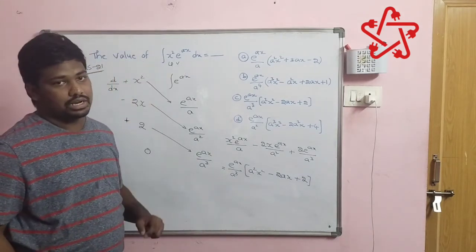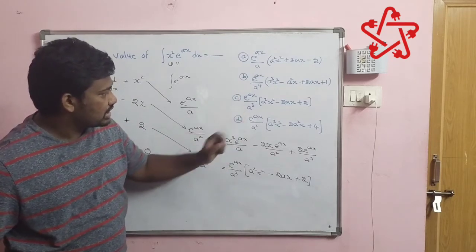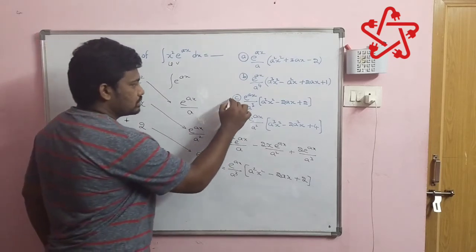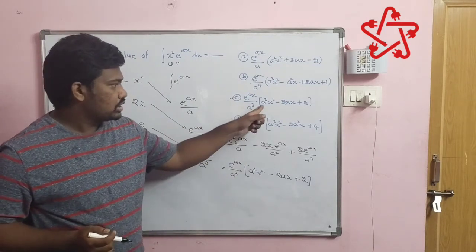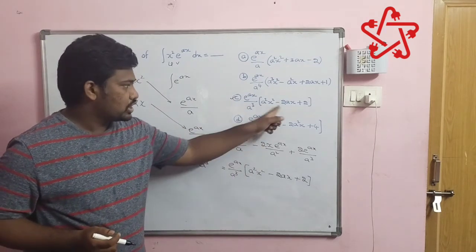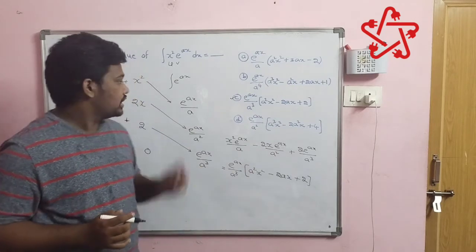Can you find any option here? See in C we can see e power ax by a cube into a square x square minus 2ax plus 2. This is the way of solving.